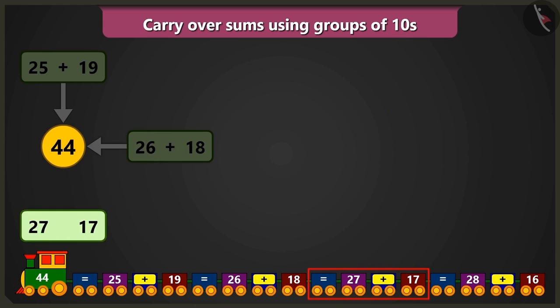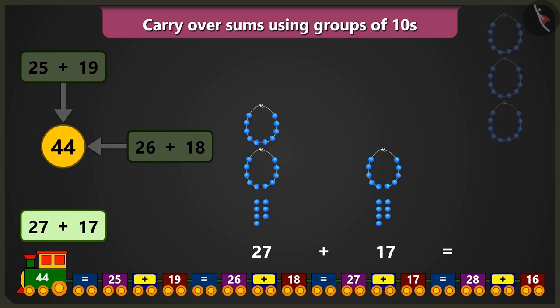Now, what will be the sum of 27 and 17? Come on. Let us take 27, that is 2 tens and 7 ones and add 17, that is 1 tens and 7 ones. 7 ones, when added to 7 ones, will equal to 14.